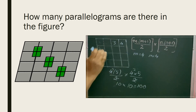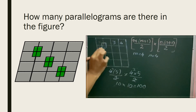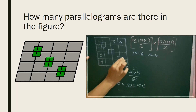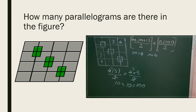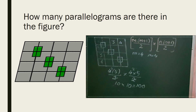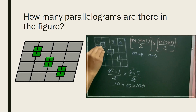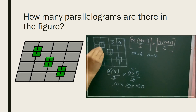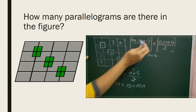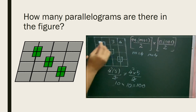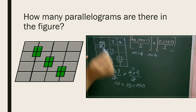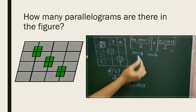If the figure is changed like this, with more parallelograms added here, the total count will be more. In addition to the 100 we already calculated, there will be extra parallelograms in the added sections. Let's count those using the same formula. The added section has m=2 rows and n=2 columns, so it's a 2 by 2 grid.